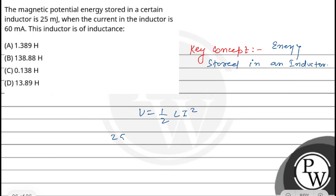25 millijoules, so 25 × 10⁻³ joules equals 1/2 L I². The current I is 60 milliamperes, so I² equals 36